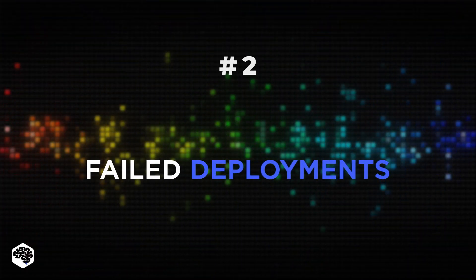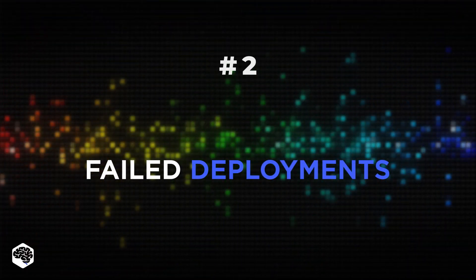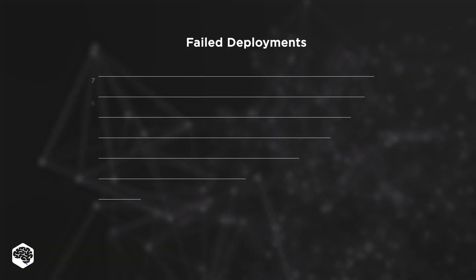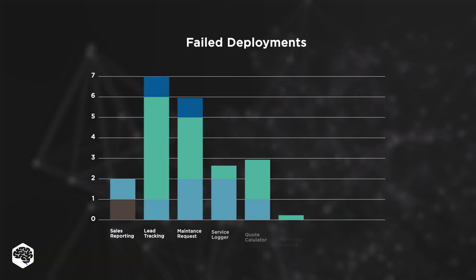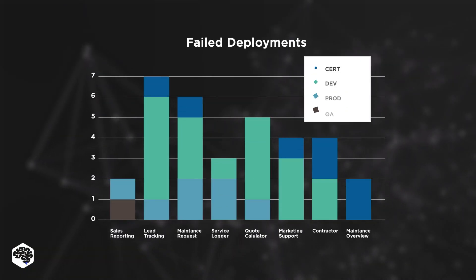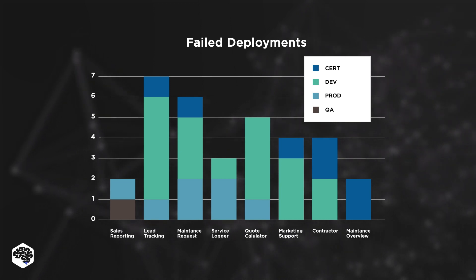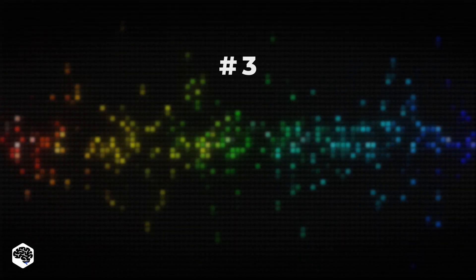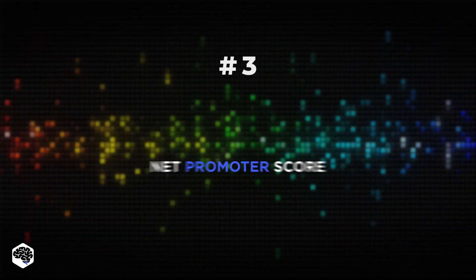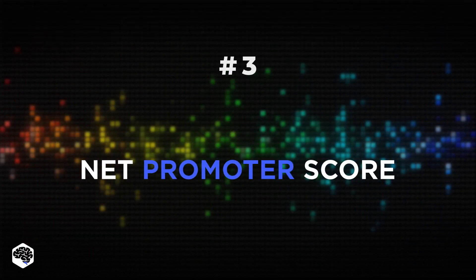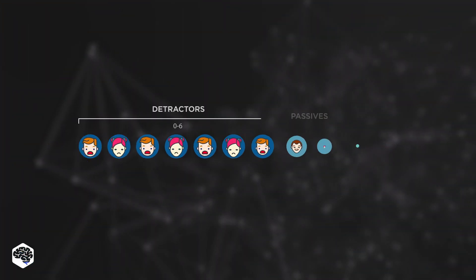The second metric is failed deployments. If the product was deployed but not released, or failed to attract users, this is recorded as a failed deployment. Whatever was the cause of the problem, you need to record all failed deployments along with the reasons for their failure.